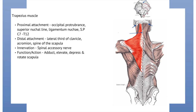And finally the spinous processes of C7 to T12. This muscle attaches distally to the lateral third of the clavicle, the acromion and the spine of the scapula, which is very well demonstrated in this diagram. It is innervated by the spinal accessory nerve, and its function is to adduct, elevate, depress and rotate the scapula.